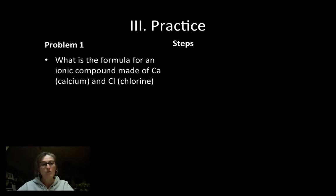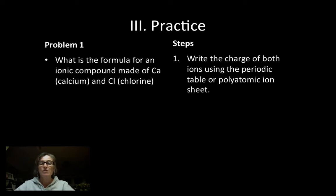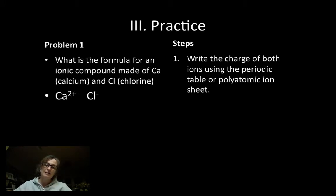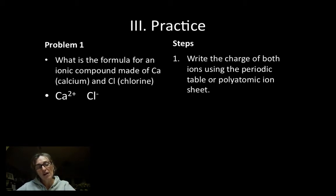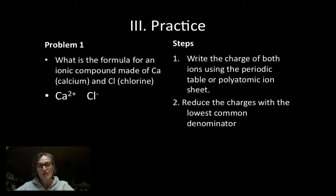Practice. Problem one: what is the formula for an ionic compound made of calcium and chlorine? Step one: write the charge of both ions using the periodic table or polyatomic ion sheet. Calcium is an alkaline earth metal and will have a two plus charge. Chlorine is a halogen and will have a minus one charge. Step two: reduce the charges with the lowest common denominator. There is no common denominator for two and minus one, so they will not reduce, and I'll leave them as is.